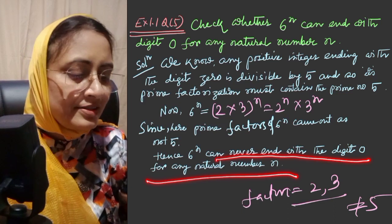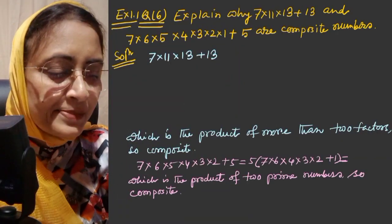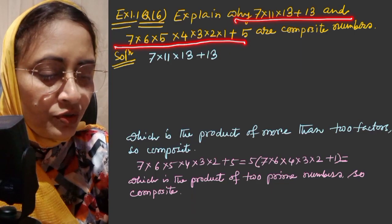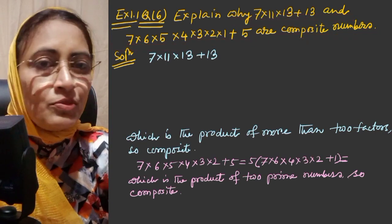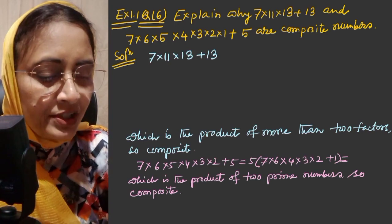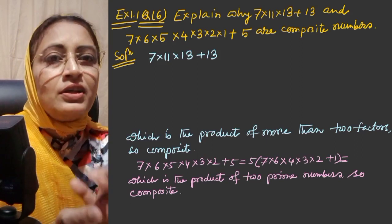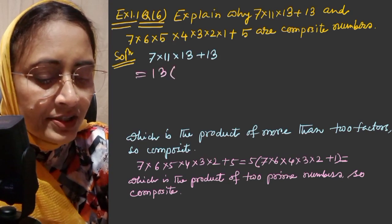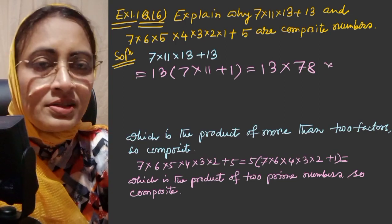Question number 6: Explain why 7×11×13+13 and 7×6×5×4×3×2×1+5 are composite numbers. A composite number has more than two factors. I'm going to simplify this. This is the product, so taking 13 common: 13 into 7×11+1, which is equal to 13×78. So it is proved that it is a composite number.